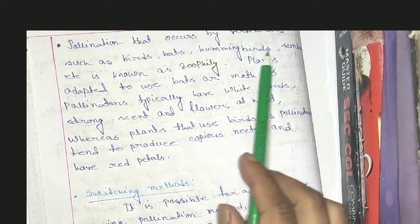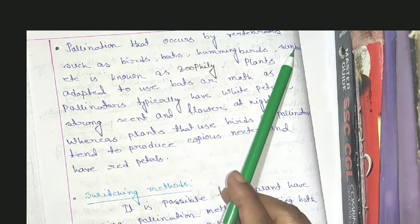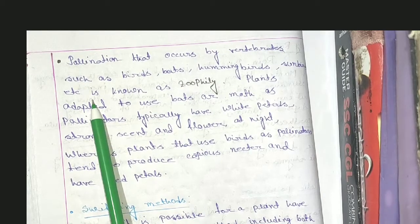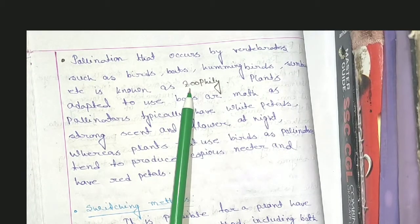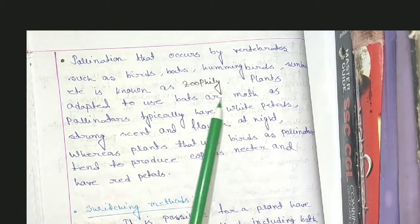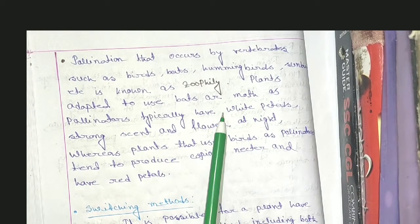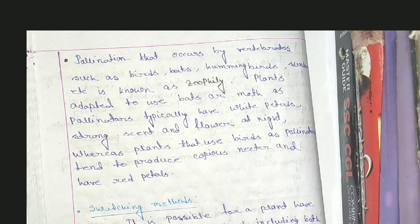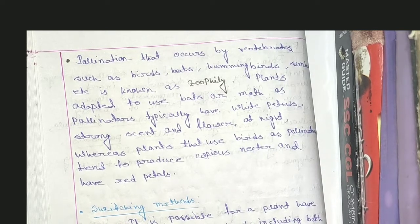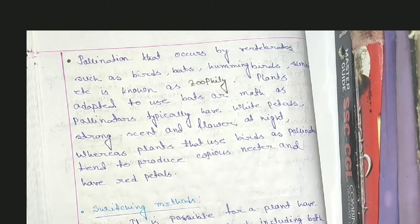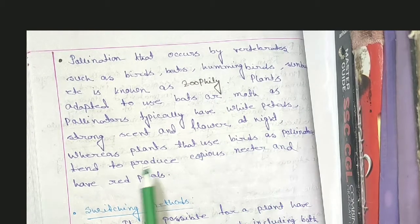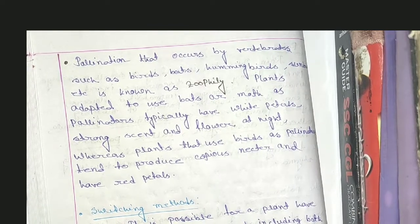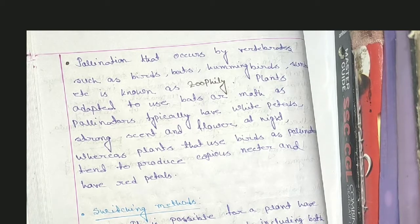The pollination that occurs through vertebrates such as birds, bats, hummingbirds, and sunbirds is known as zoophily. Plants adapted to use bats or moths as pollinators typically have white petals, strong scent, and flower at night. Plants that use birds as pollinators tend to produce copious nectar and have red petals.